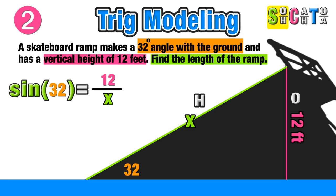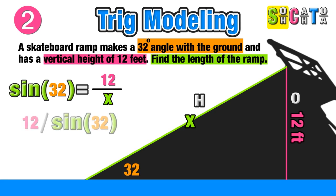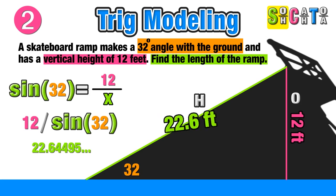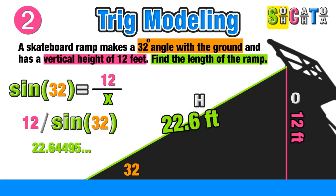Since x is on the bottom of the fraction, we use division here. So we have 12 divided by the sine of 32 degrees, which rounds to approximately 22.6 feet — the approximate length of the skateboard ramp.